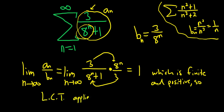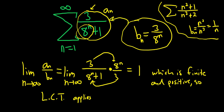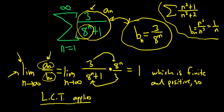It's really important to always construct your b sub n, which should have the same growth rate as a sub n. Then verify that it has the same growth rate by taking this limit — that's what this limit is saying. If this limit equals one, that means a sub n grows at the same rate as b sub n. Because the limit comparison test applies, the sum of the a's will behave the same as the sum of the b's: if the sum of the b's converges, the sum of the a's also converges; if the sum of the b's diverges, this series will also diverge.